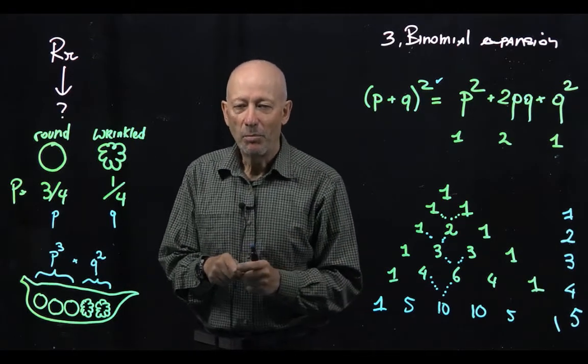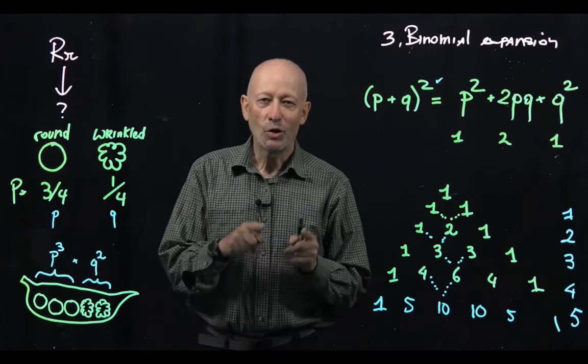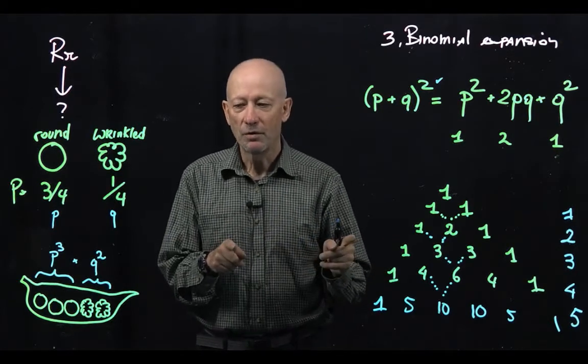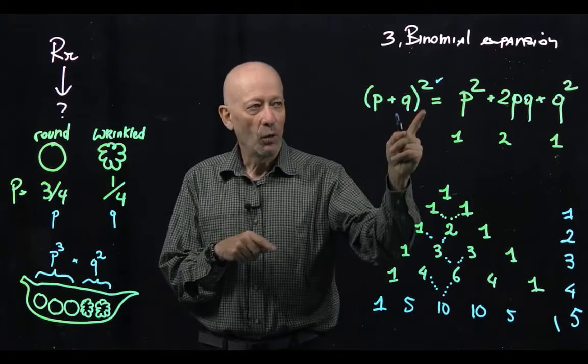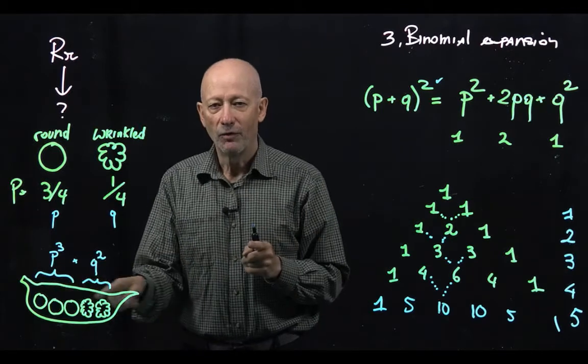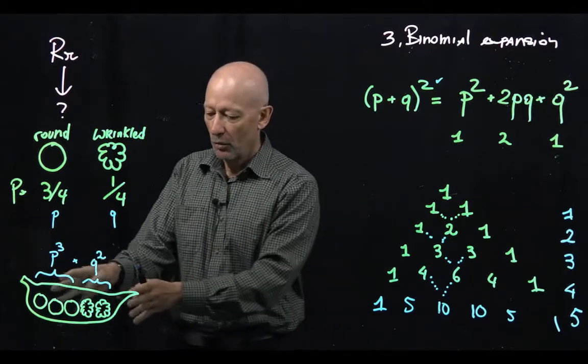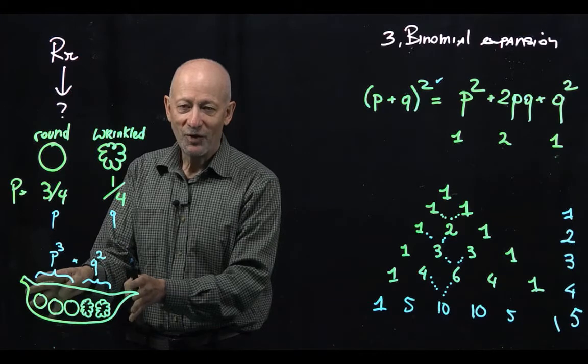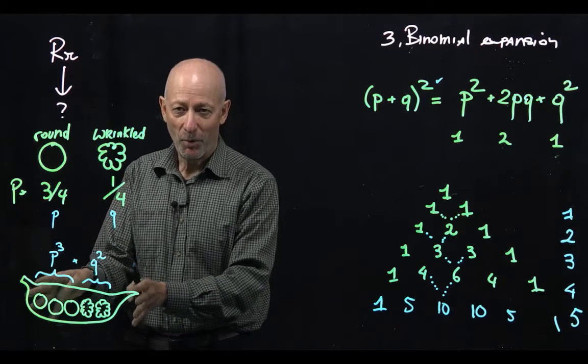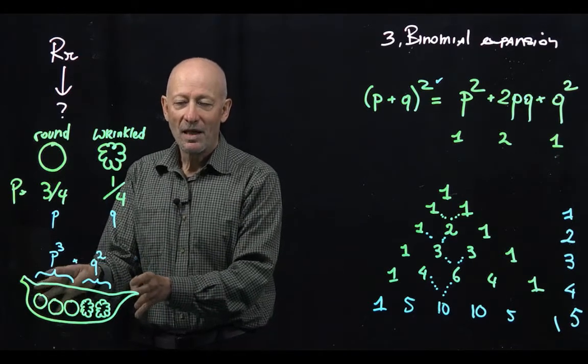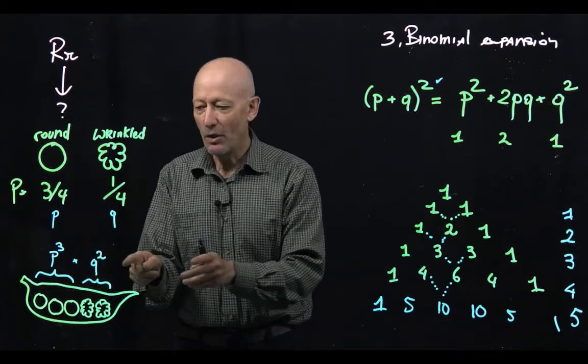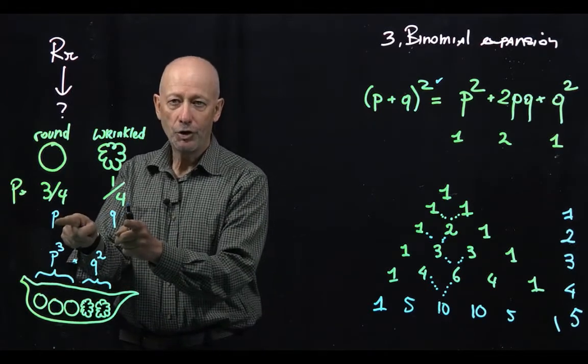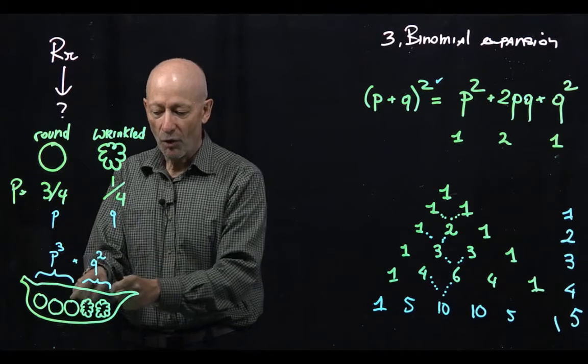And the number of pods is provided by the coefficient of the expansion for the power of the number of seeds being present. So the probability of this type of pods is provided by expanding the binomial of p and q by the exponent of 5.